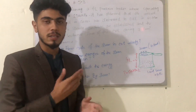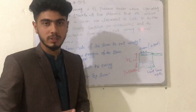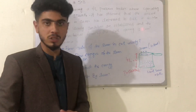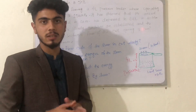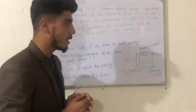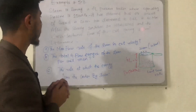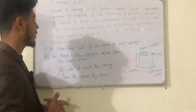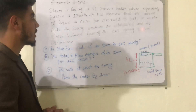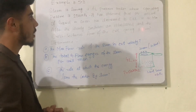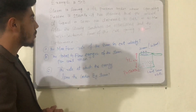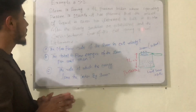This is example 5.3 from the thermodynamics book by Yunus Cengel, related to energy transported by mass. The problem statement: steam is leaving a 4-liter pressure cooker whose operating pressure is 150 kilopascal.